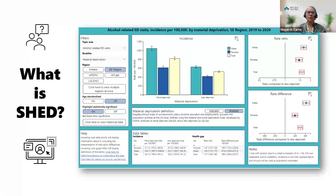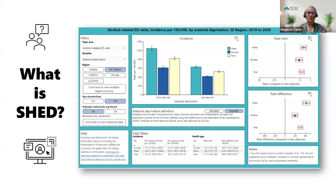SHED started pre-pandemic with the goal of collaboration, standardization, and sharing data resources across local public health agencies in the Southeastern region. A working group at KFL&A Public Health, including epidemiologists and research associates, has been working with epidemiologists at Hastings-Prince Edward Public Health and Leeds Grenville-Lanark District Health on this project since the beginning. This involved developing a shared understanding, a terms of reference, and a data sharing agreement.